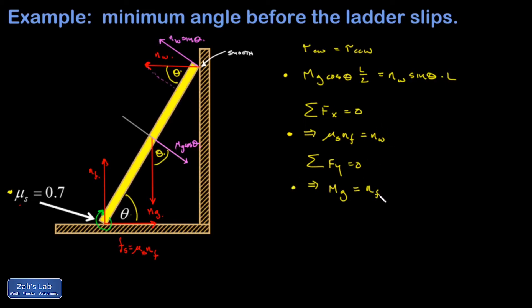So then I can attack this just with substitutions. I don't have to do anything fancy. I'm going to replace nf with mg in my second equation and then I'm going to replace nw with that expression in the first equation. So all of that results in an equation that looks like this: mg cosine theta l over 2 equals mu_s mg.